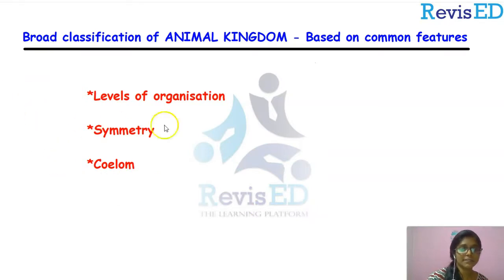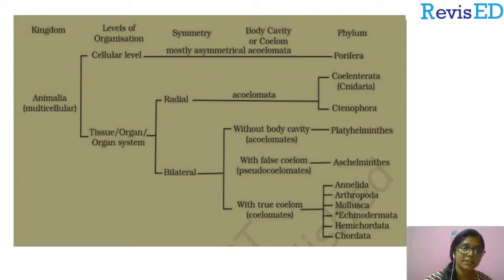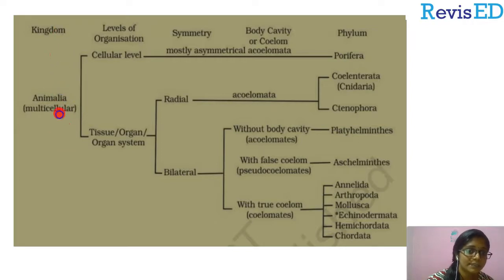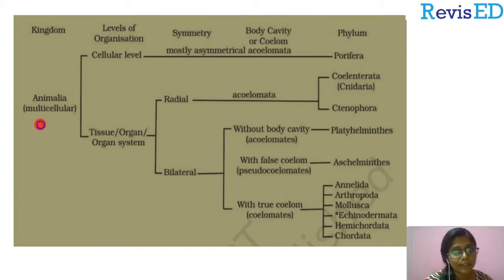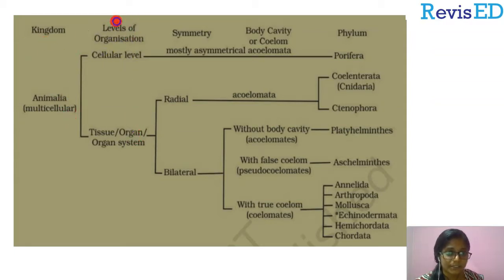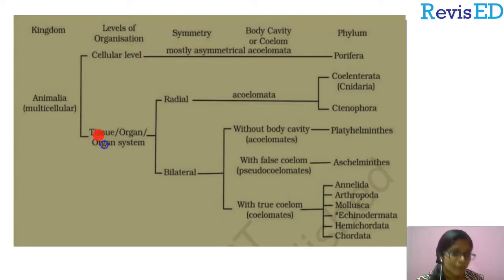Let's see the broad classification based on the points we have discussed. The kingdom is Kingdom Animalia, which includes multicellular organisms. The first division is based on levels of organization. Animalia is divided into two groups: the first category is cellular level of organization, and the second category is the common group of tissue level, organ level, and organ system level of animals.